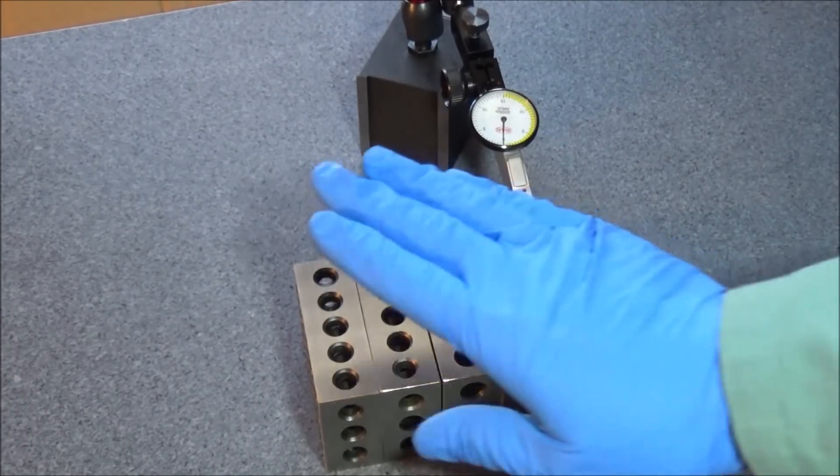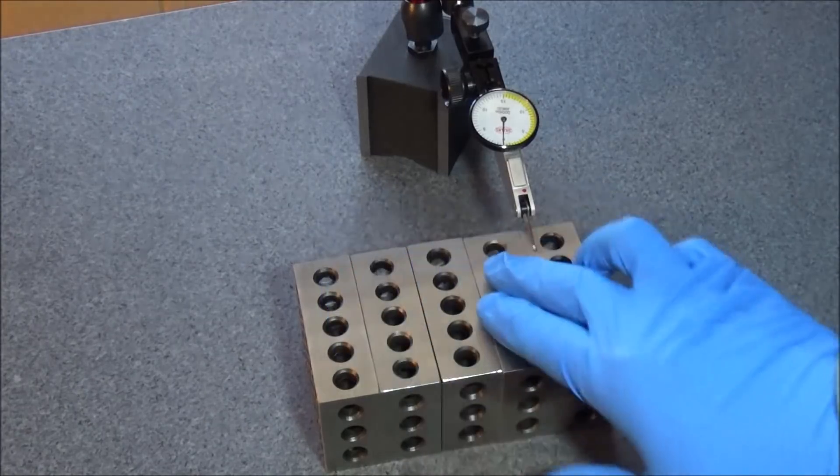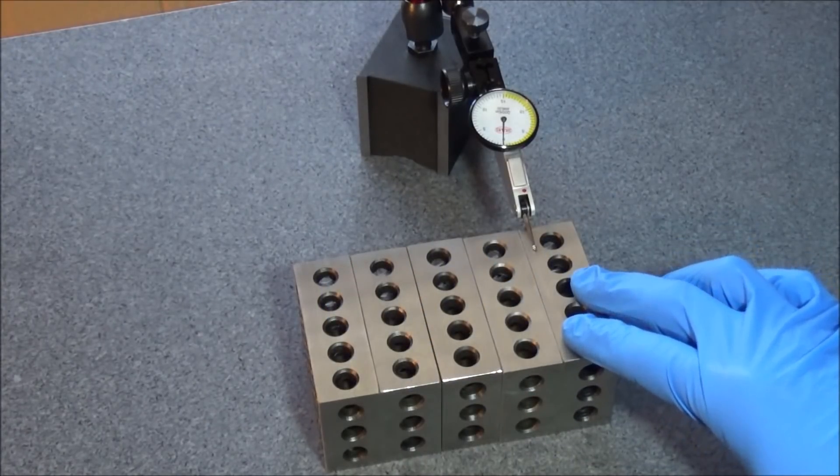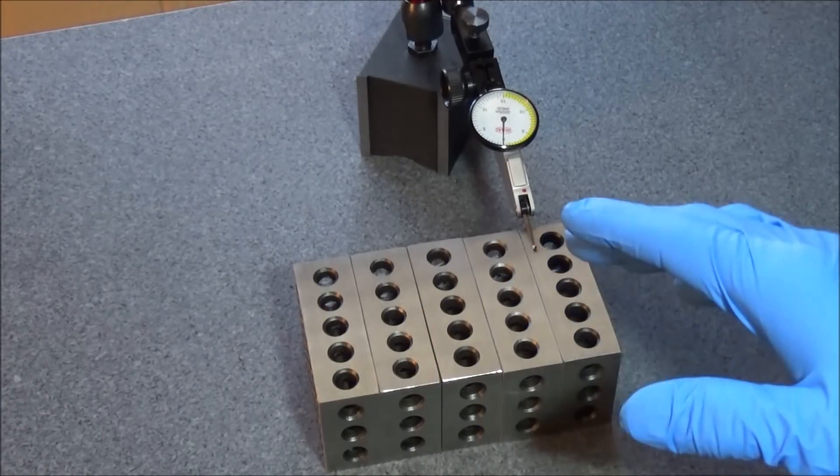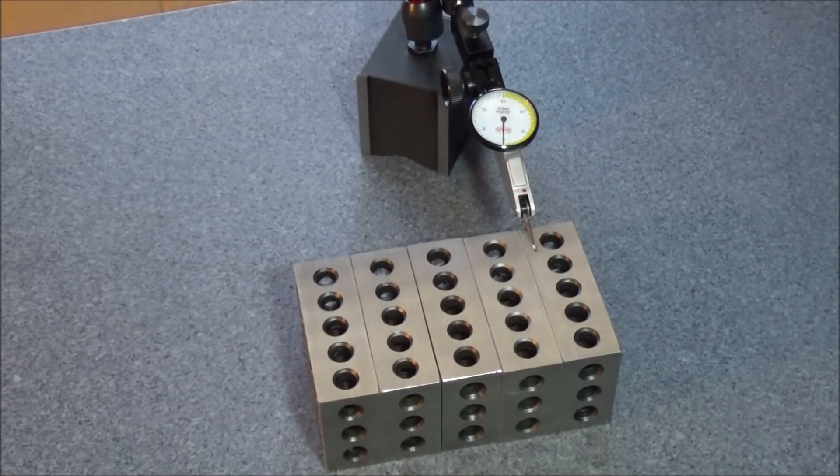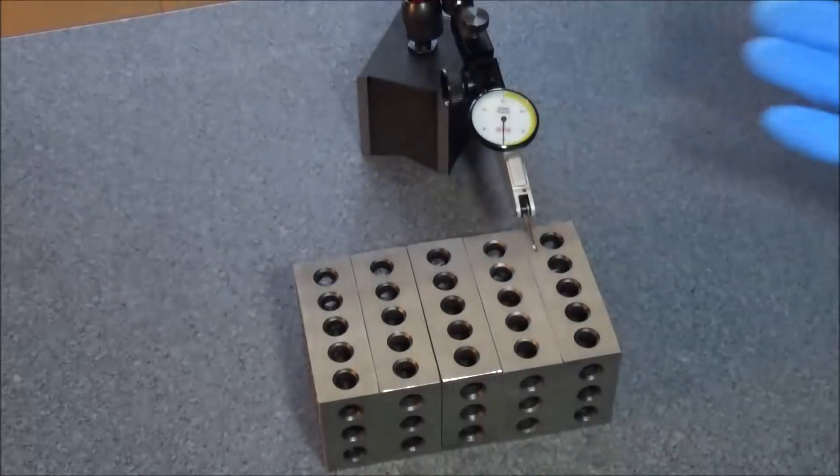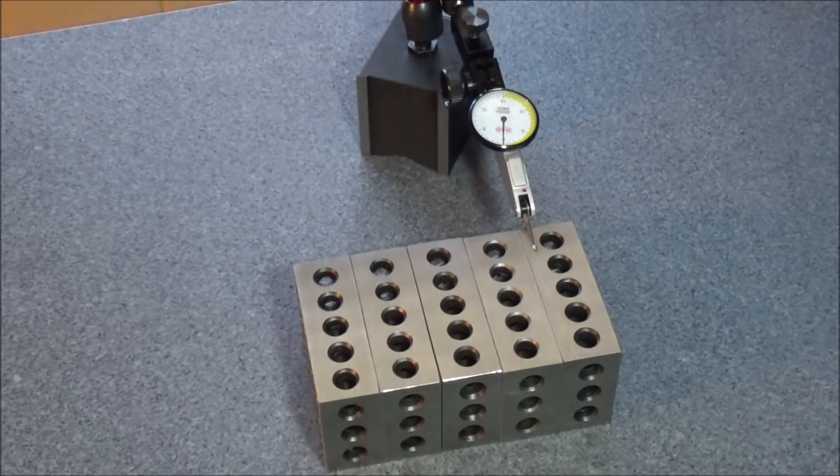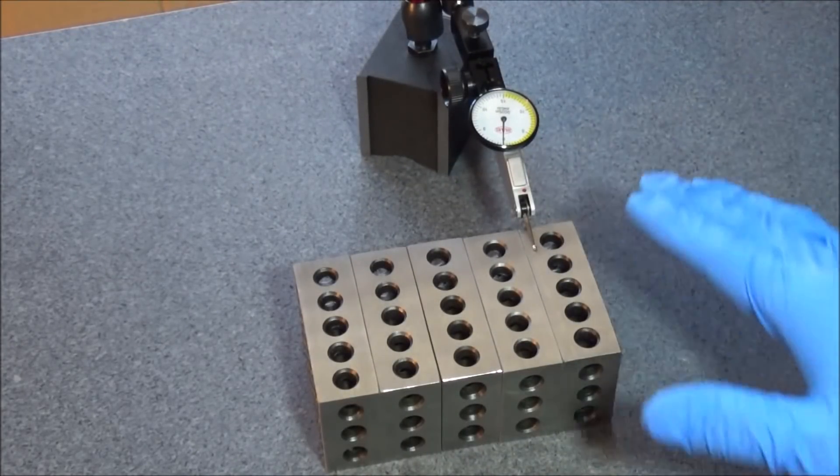So you want to check your 1-2-3 blocks and make sure that they're all the same, especially if you're going to be using them as I did to check the flatness of your ways. If your blocks are uneven it's going to throw your dimensions off and it's going to throw your measurements off.